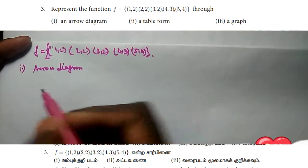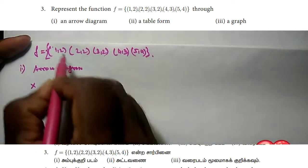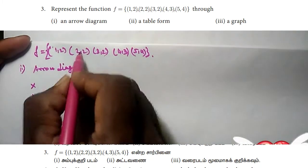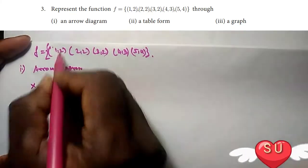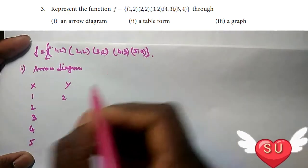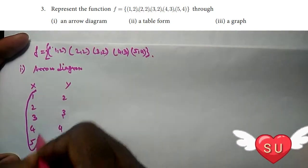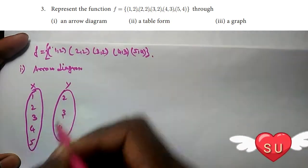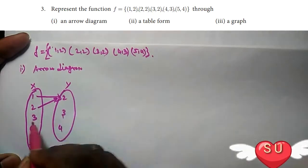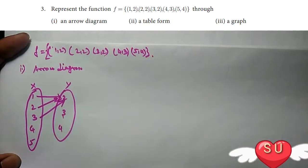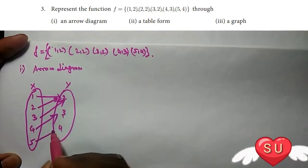So first, the A points and B points. In x first, y. First points: x point 1, 2, 3, 4, 5. Next: (1,2), (2,2), (3,2), (4,3).